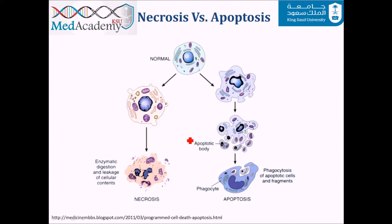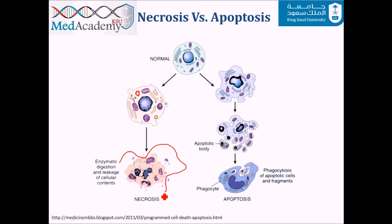Necrosis starts with severe membrane damage. This includes membranes inside the cell, including those lining the lysosomes, which contain digestive enzymes. When membrane damage occurs, there is leakage of those enzymes into the cell, cell digestion, and leakage of cellular contents into the extracellular space. The cell not only dies but also creates inflammation around it.